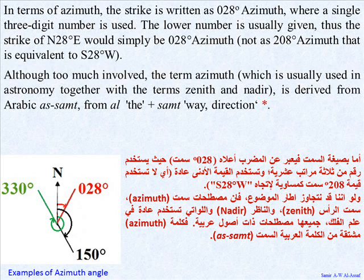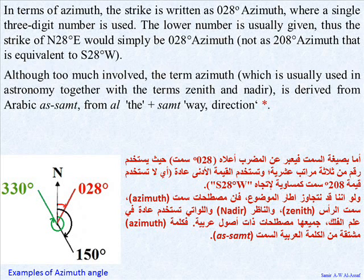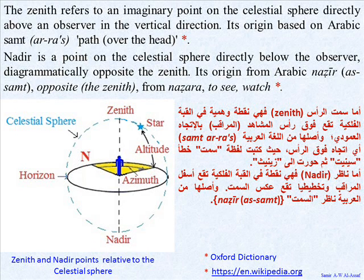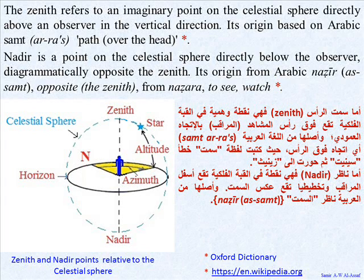The lower azimuth number is used — 028 degrees, not 208 degrees azimuth (equivalent to south 28 degrees west). The term 'azimuth', usually used in astronomy together with 'zenith' and 'nadir', is derived from Arabic 'as-semt' (from 'al-' plus 'semt', meaning way or direction). 'Zenith' refers to an imaginary point on the celestial sphere directly above an observer; its Arabic origin is 'semt al-ras' (path over the head). 'Nadir' is a point on the celestial sphere directly below the observer, diametrically opposite the zenith; its Arabic origin is 'nadir as-semt' (opposite the zenith), from 'nadara', meaning to see or watch.